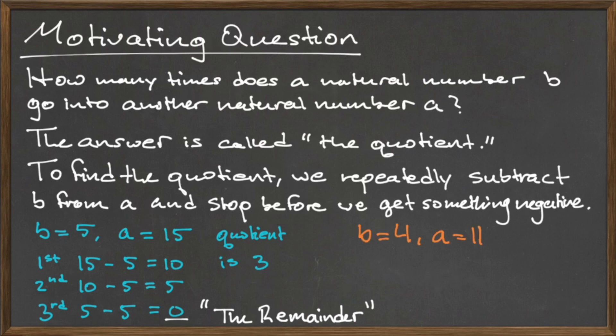Let's do another example by computing the division of 11 by 4. Since 11 is bigger than 4, we can compute one subtraction to get 11 minus 4, which is equal to 7. Since 7 is bigger than 4, we can compute another subtraction to get 7 minus 4, which is equal to 3.